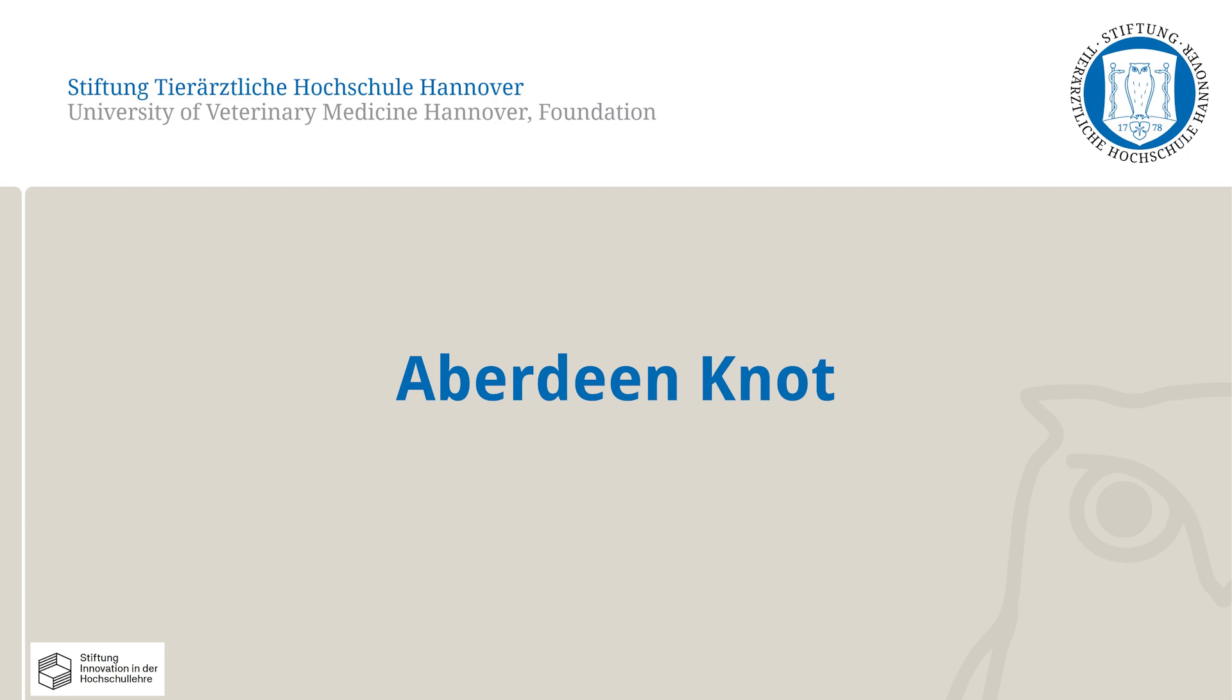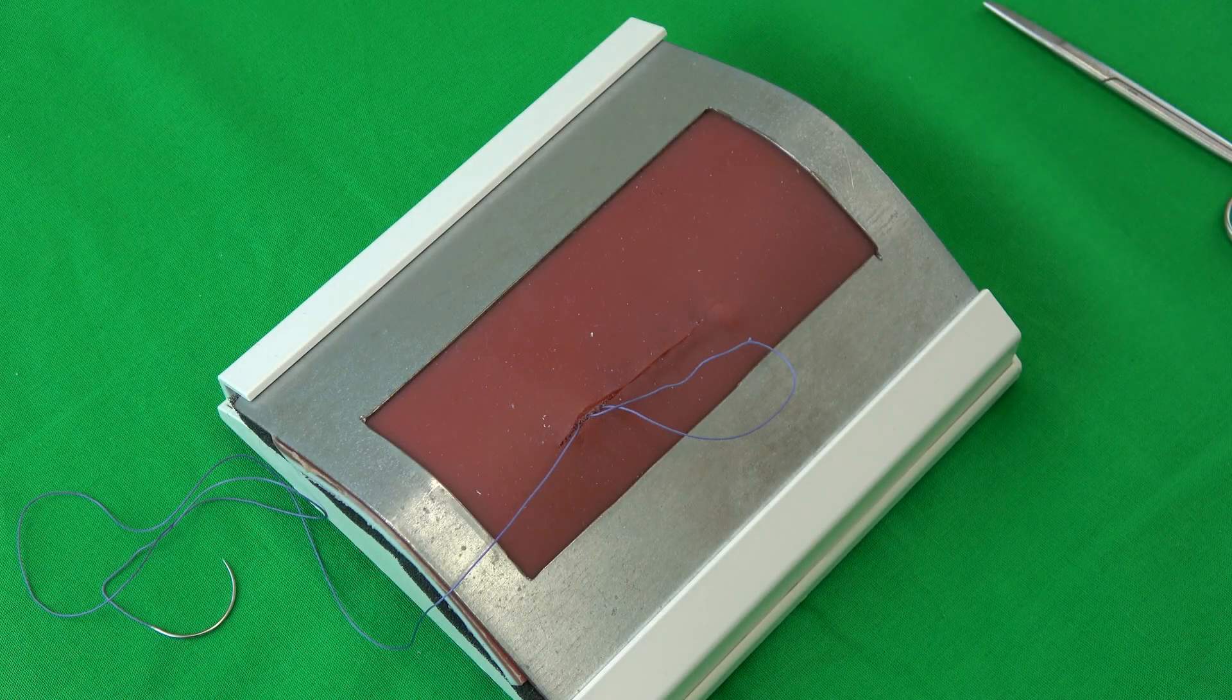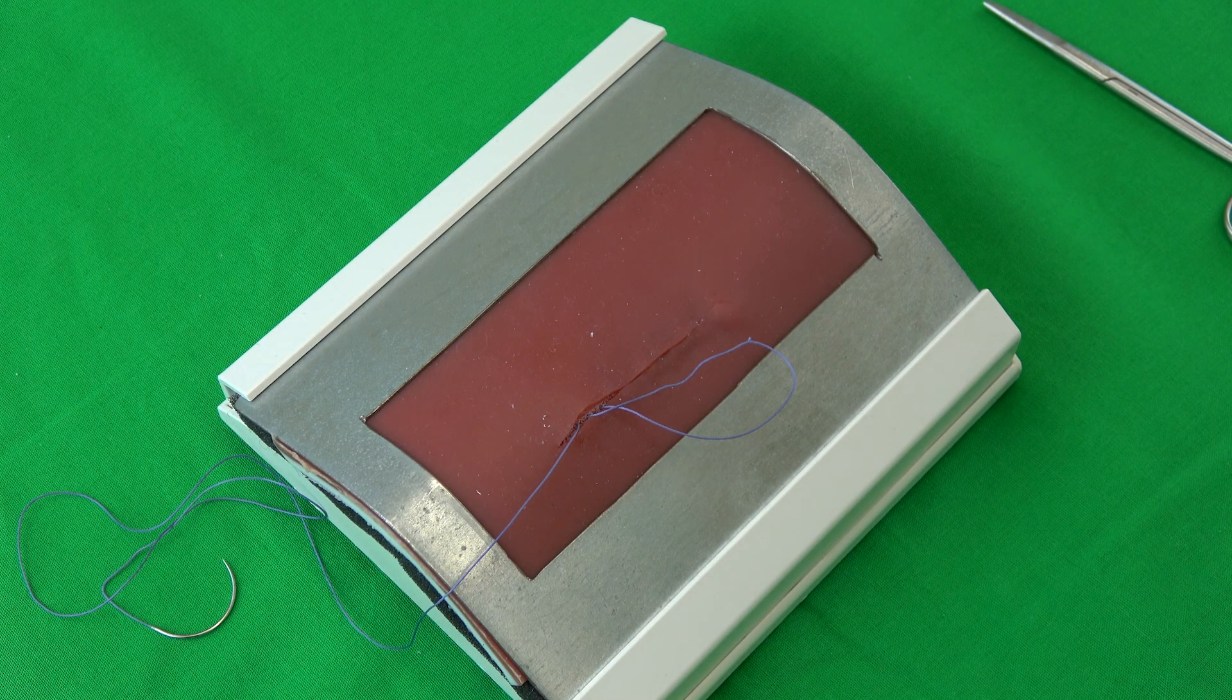The Aberdeen knot is an alternative to the square knot at the end of a suture. The main advantage of the Aberdeen knot is that it can safely and easily be buried subcutaneously and does not produce a second suture end.